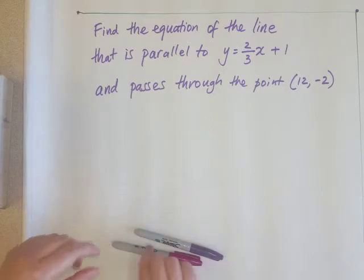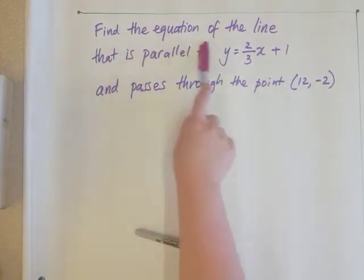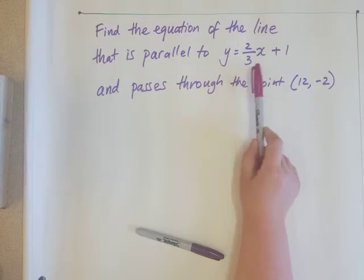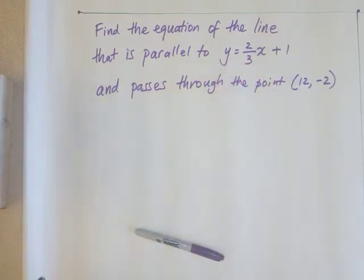The first part of the question says, find the equation of the line which is parallel to y equals 2 thirds x plus 1. We know that if a line is parallel, it means the gradient is going to be the same.